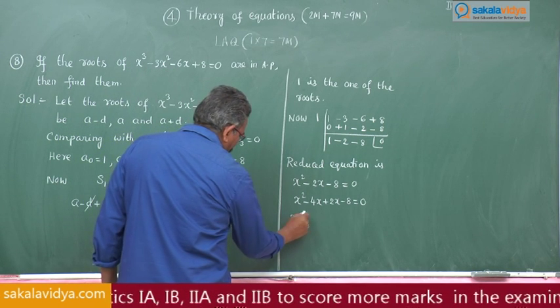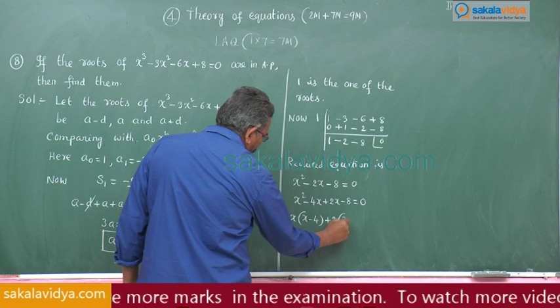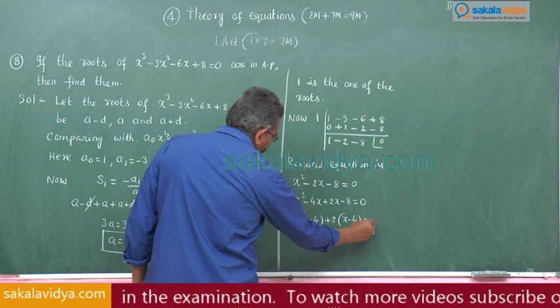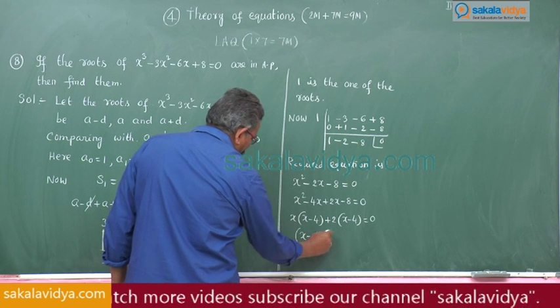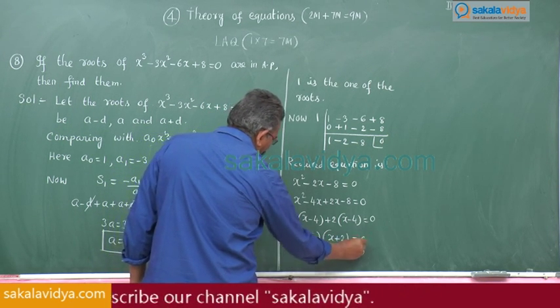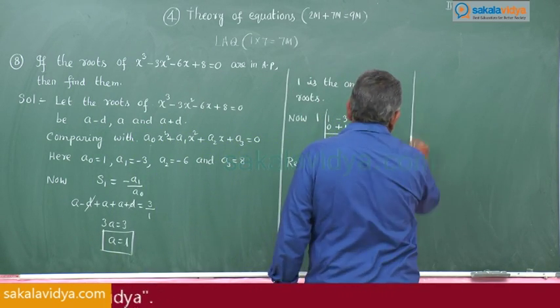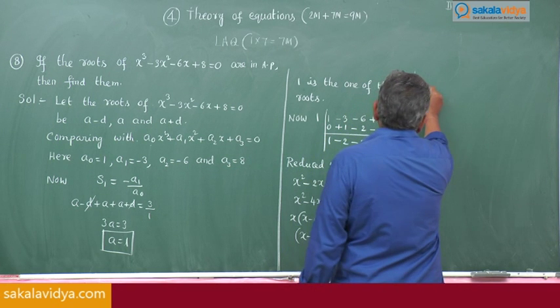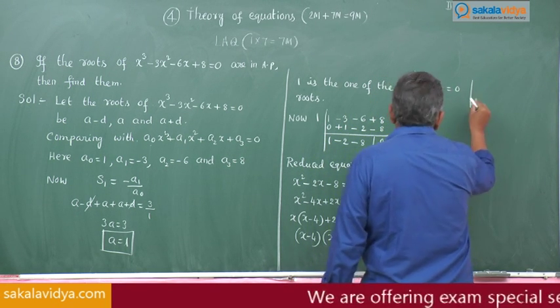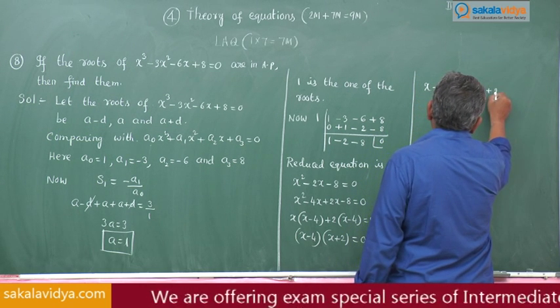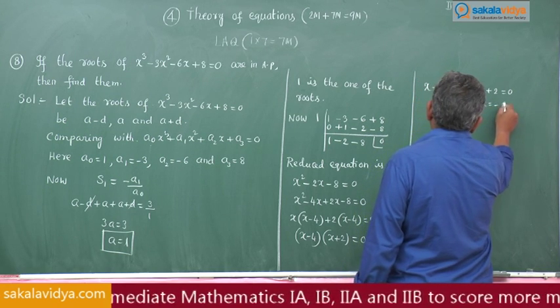Factoring: x(x - 4) + 2(x - 4) = 0, so (x - 4)(x + 2) = 0. Therefore, x = 4 and x = -2.